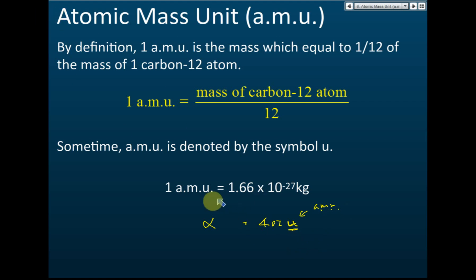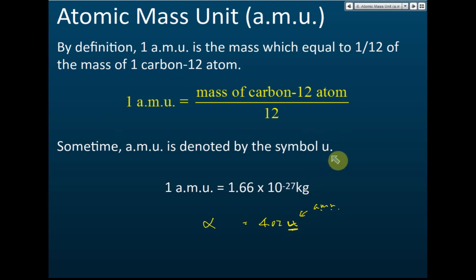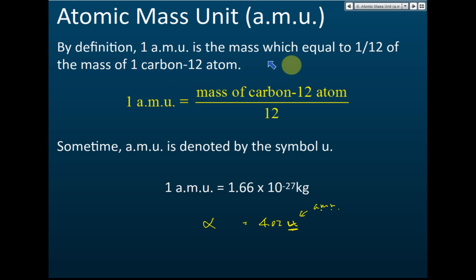They will give you the conversion and then you can convert it into kg. But sometimes, very rarely, they will ask you to do your calculations based on the definition of atomic mass units. You need to know what one AMU is. One atomic mass unit is the mass of one-twelfth of the mass of one carbon-12 atom. So we take the mass of carbon-12 divided by 12, and that is one atomic mass unit.